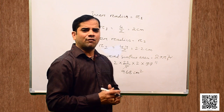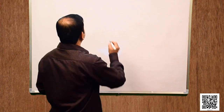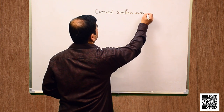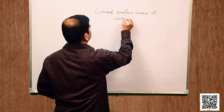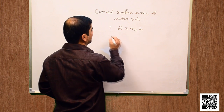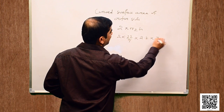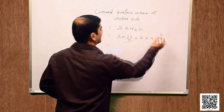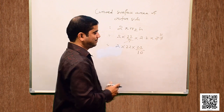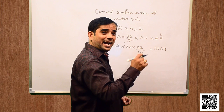Now let us find the curved surface area of the outer surface of the pipe. Curved surface area of the outer side is equal to 2πR2H, that is 2 into 22 by 7 into 2.2 into 77, which gives 2 into 22 into 22 by 10, and this becomes 1064.8 centimeter square.